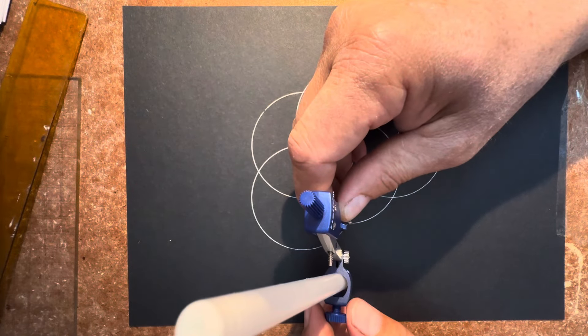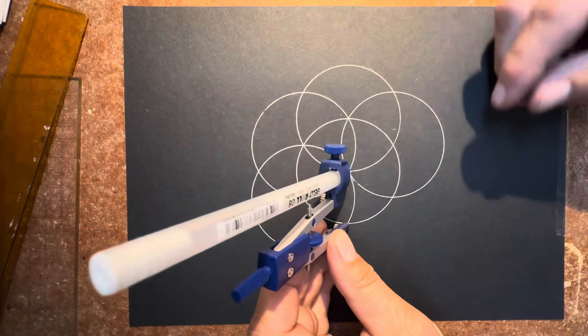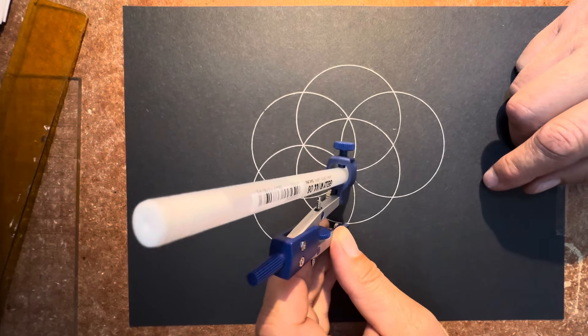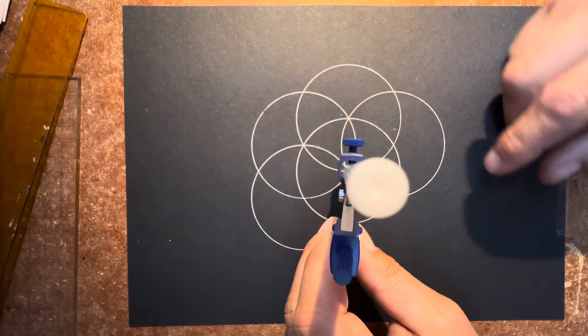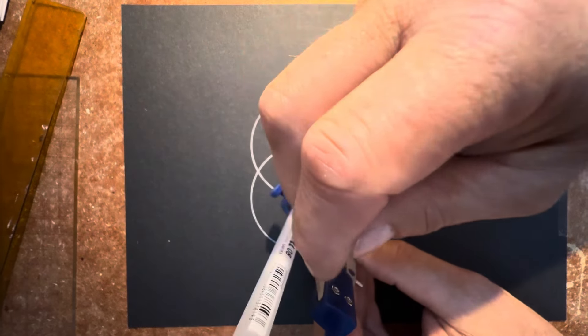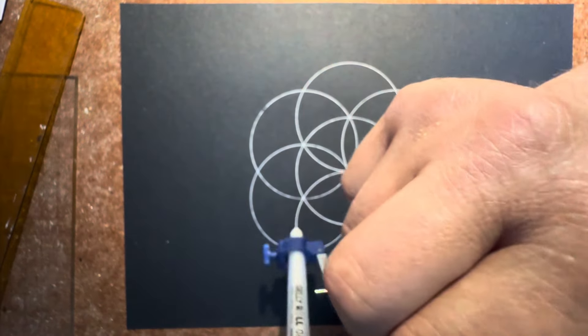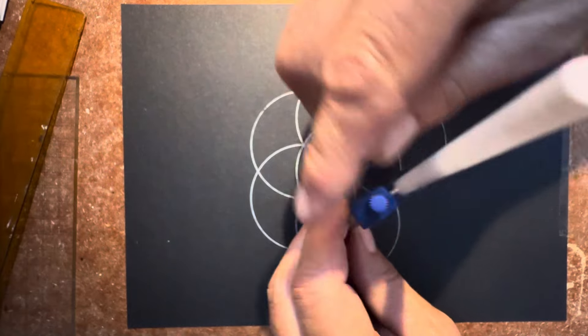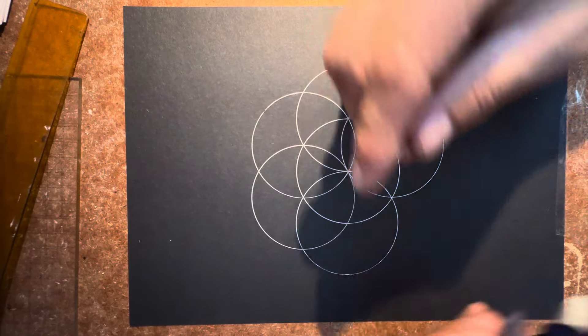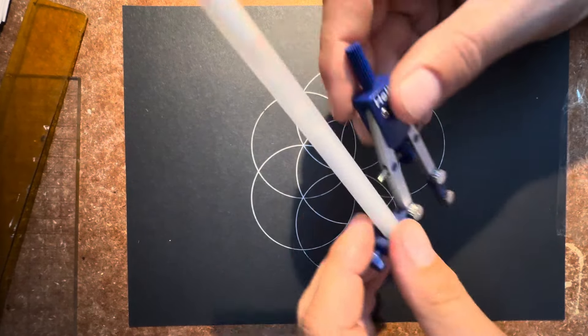And you draw a sixth circle. I want to make sure you are pinpoint accurate. And then the seventh circle completes the design.